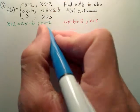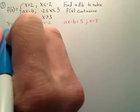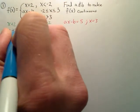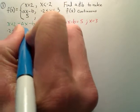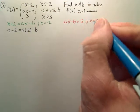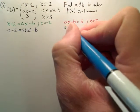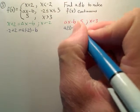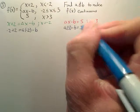So for this particular one, I'm going to plug negative 2 in for x, so I end up with negative 2 plus 2 equals a times negative 2 minus b. For this one, I plug in 3, I get a times 3 minus b equals 5.